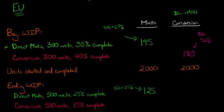Moving on to conversion costs for ending WIP: we multiply 500 by 15%, which gives us 75.